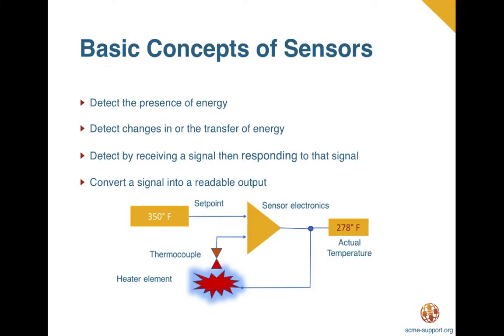Sensors detect the presence of energies as well as changes in or the transfer of energies. Sensors detect by receiving a signal from a device such as a transducer, then respond to that signal by converting it into an output that can easily be read and understood. Typically sensors convert a recognized signal into an electrical, analog, or digital output that is readable. In other words, the sensor takes the output of the transducer and converts it to a readable format.